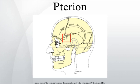The pterion is the region where the frontal, parietal, temporal, and sphenoid bones join together. It is located on the side of the skull, just behind the temple structure. The pterion is located in the temporal fossa, approximately 2.6 cm behind and 1.3 cm above the posterolateral margin of the frontozygomatic suture.